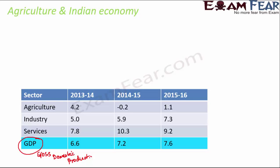Simply put, GDP is a monetary measurement of the market value of a particular good or service. Looking at real data for India: in 2013-14 the GDP growth rate was 6.6%, in 2014-15 it was 7.2%, and in 2015-16 it was 7.6%, showing that India's GDP is increasing.